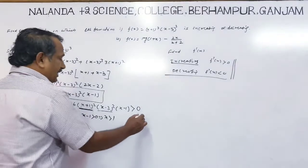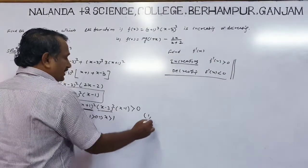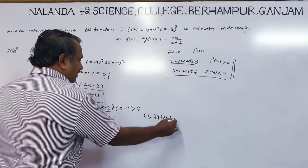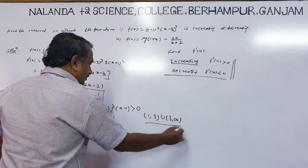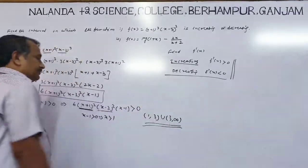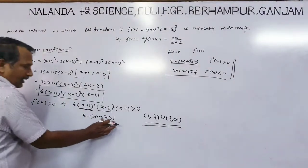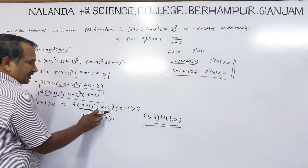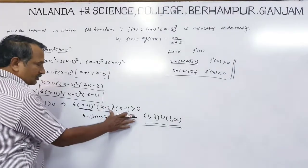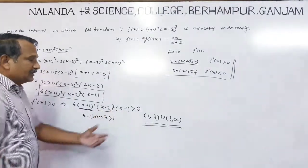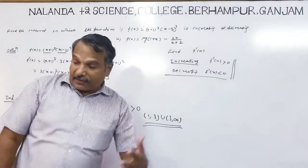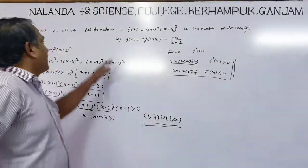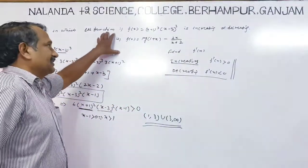So the interval where the function is increasing is x greater than 1, but not equal to 3. The increasing intervals are (1, 3) union (3, ∞). On these intervals, for any value of x, the function is increasing.